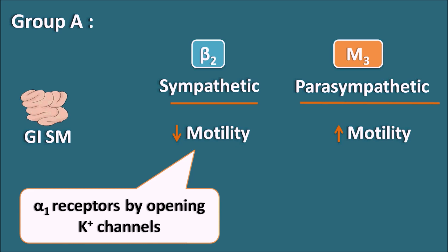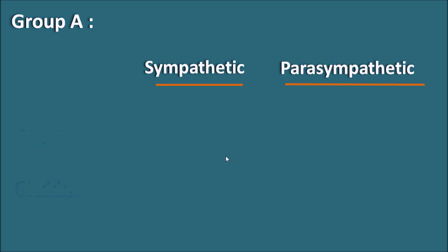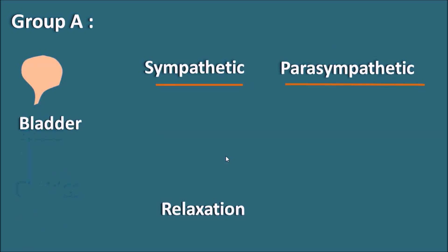The sympathetic system can also decrease the motility via alpha 1 receptors, which work by opening of the potassium channels. We have to remember that alpha 1 receptors produce contraction of all smooth muscles except the GI smooth muscle, because at the GI smooth muscle they work by opening of the potassium channels.